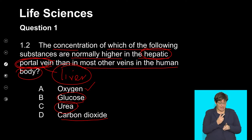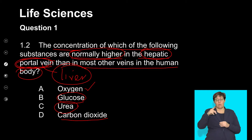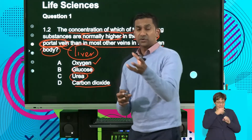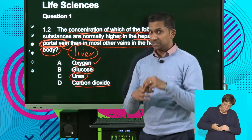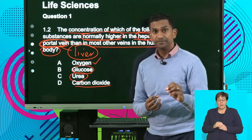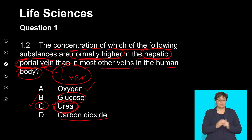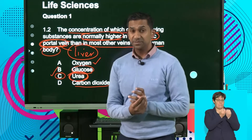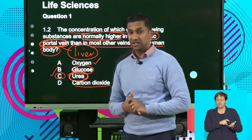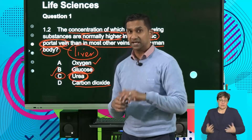Going back to the question: the concentration of which of the following substances is normally higher in the hepatic portal vein than in most other veins in the human body? The vein carries blood away from the liver, and the liver predominantly removes excess glucose. It also produces urea, which we would see as being significantly higher compared to any other vessel in the body. So the answer for this question is C. These answers can be very confusing — it requires that you reflect on your understanding and apply your collective knowledge to answer.